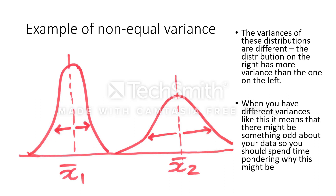It might be the case that you've collected two different samples and produced two different means, but these samples come from distributions that are different and have different amounts of variance. The first mean, X-bar 1, has a restricted variance — the samples are quite close to the average. Whereas the second mean, mean 2, has scores contributing to the average that are much more spread out. This would tell us we might have an issue with the variances being different, in which case we may need to contemplate doing a different type of statistical test.